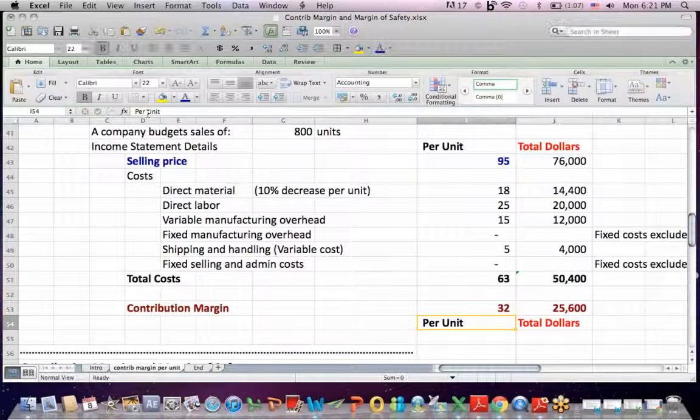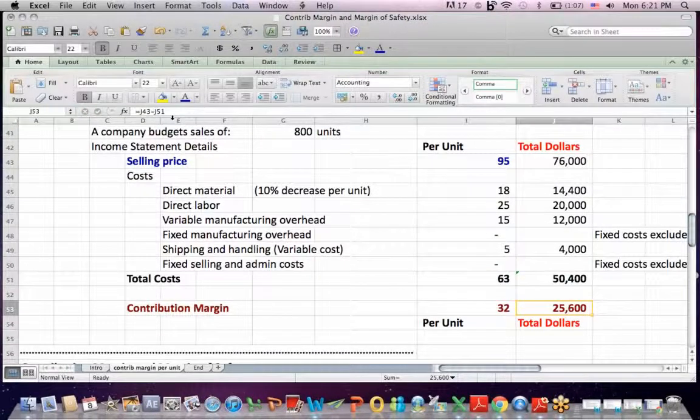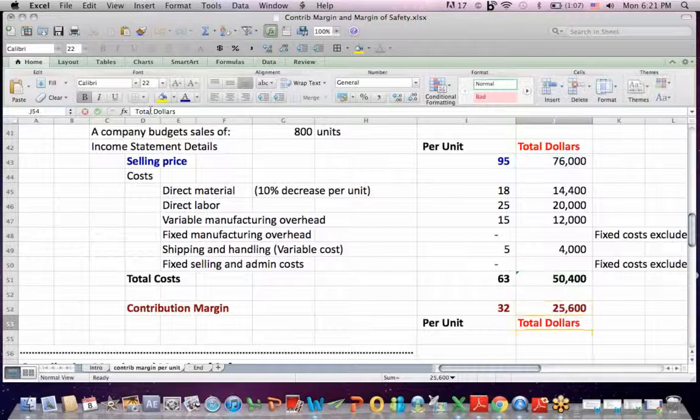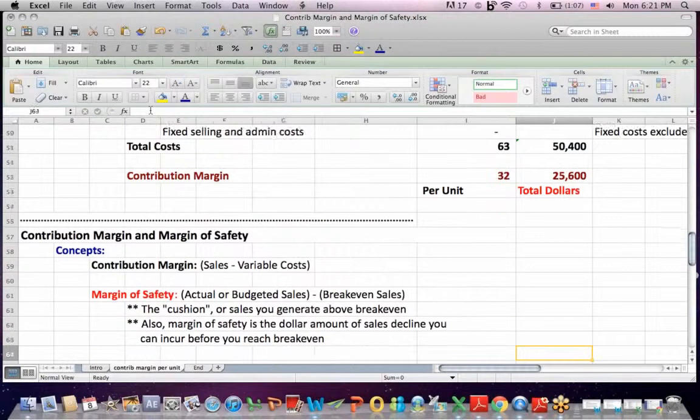And so I end up getting a contribution margin, sales in blue less total costs in black, of $32. And I also get contribution margin in dollars of $25,600.